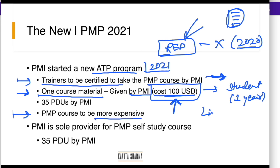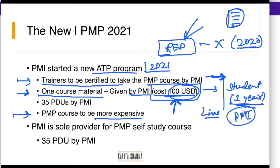Any live training you take from me or somewhere else is going to be more expensive because a certain part of the money goes to PMI for the course material. Whenever you become my student or somebody else's student, you would also have access at the PMI website. The PMI fulfillment website is called something like LO Choice, and you would have access to the course material for one year.